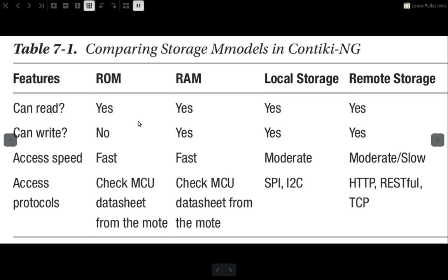For access protocols, the microcontroller unit (MCU) accesses ROM directly. The data bytes stored in ROM are specified by the MCU. RAM typically provides around 121 to 256 bytes for a particular mote. For local storage, access protocols are either SPI (Serial Peripheral Interface) or I²C (Inter-Integrated Circuit). For remote storage we use web APIs — HTTP RESTful API and TCP.